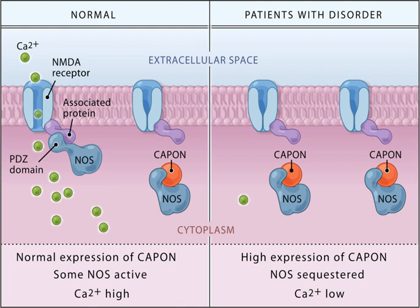Furthermore, Otto Loewi is credited with discovering acetylcholine (ACh), the first known neurotransmitter. Some neurons, however, communicate via electrical synapses through the use of gap junctions, which allow specific ions to pass directly from one cell to another.